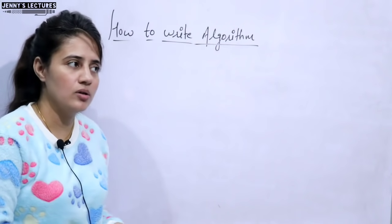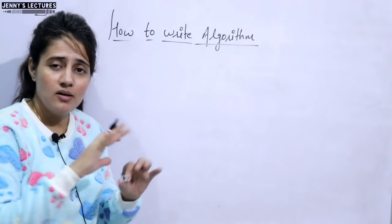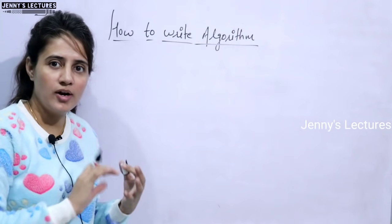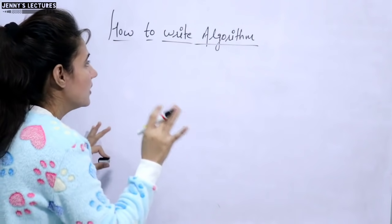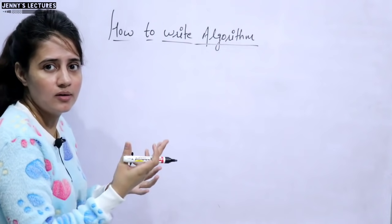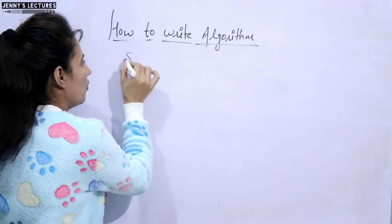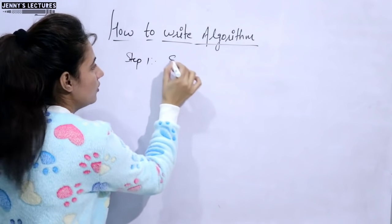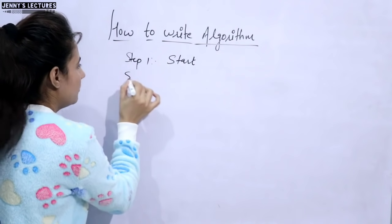Now, how to write an algorithm? See, generally we write, there is no standard rule for writing algorithm, like you have to follow these rules only or you have to write this type only. That thing also we'll discuss. So first thing is, generally we write numbering of each instruction or each step, like first is step 1, and in step 1 we write start.